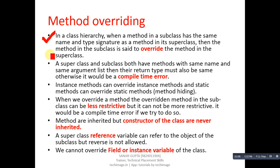From this first statement we can understand that both super and subclasses have a function or method with the same name and same type signature, and this will happen when we are implementing inheritance. The second point says: if a superclass and subclass both have methods with the same name and same argument list, then their return type must also be the same, otherwise it would be a compile-time error.